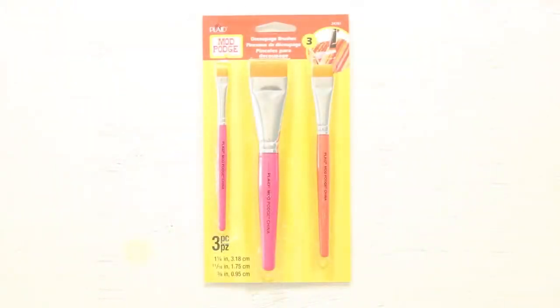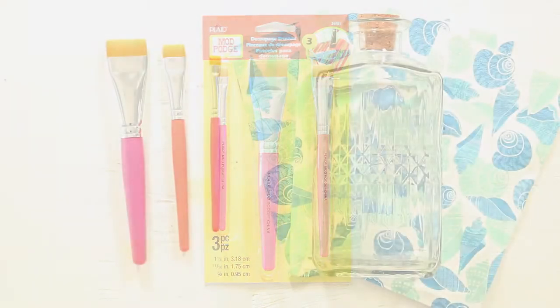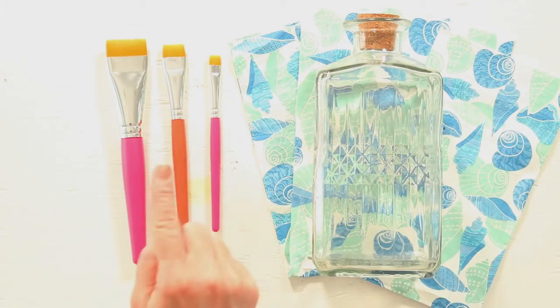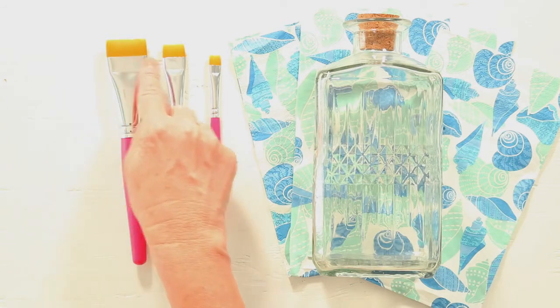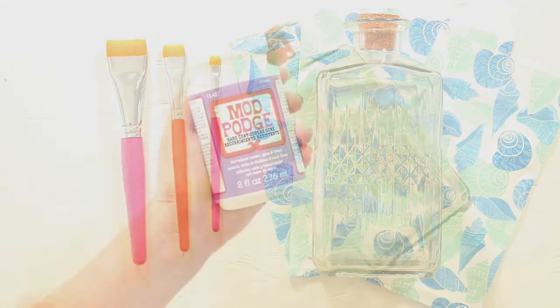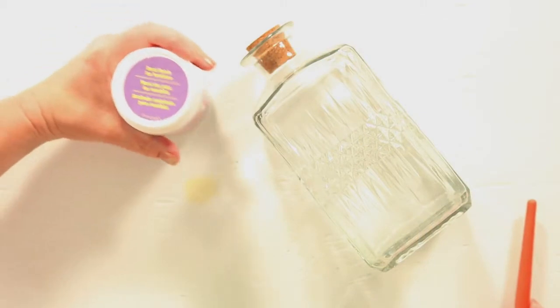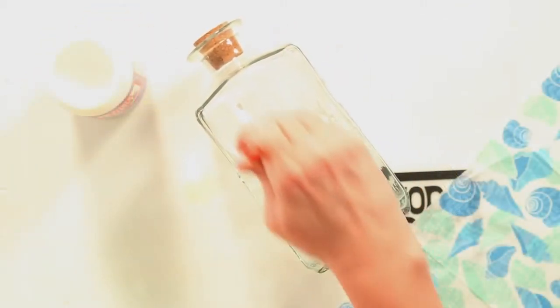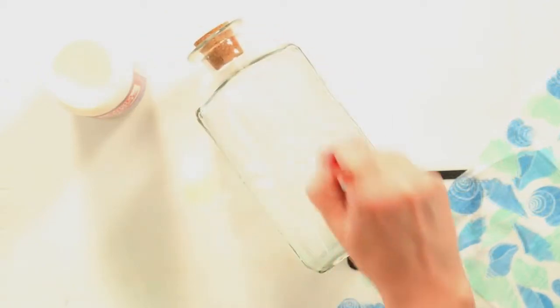The decoupage brush set comes with 3 brushes. You get a half inch, a 3 quarter and a 1 and 1 eighth. The bristles are short. The short bristles make it easy to press papers into ornate surfaces. They work great when you're Mod Podging with napkins and thin paper.